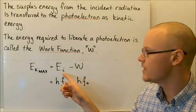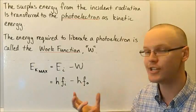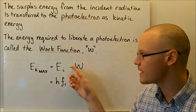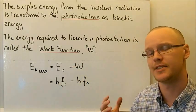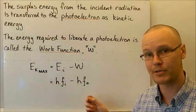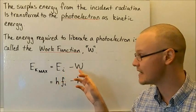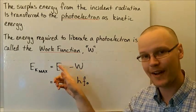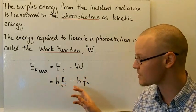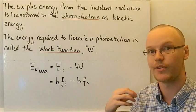Through Planck's equation E = hf, the incident energy is related to the frequency of the photon — Planck's constant multiplied by frequency gives the energy coming in. Similarly, the work function can be written as h times F₀, where F₀ is the threshold frequency — the minimum frequency required to just liberate the electron. When the incident energy equals the work function, the maximum kinetic energy is zero, which defines the threshold frequency.